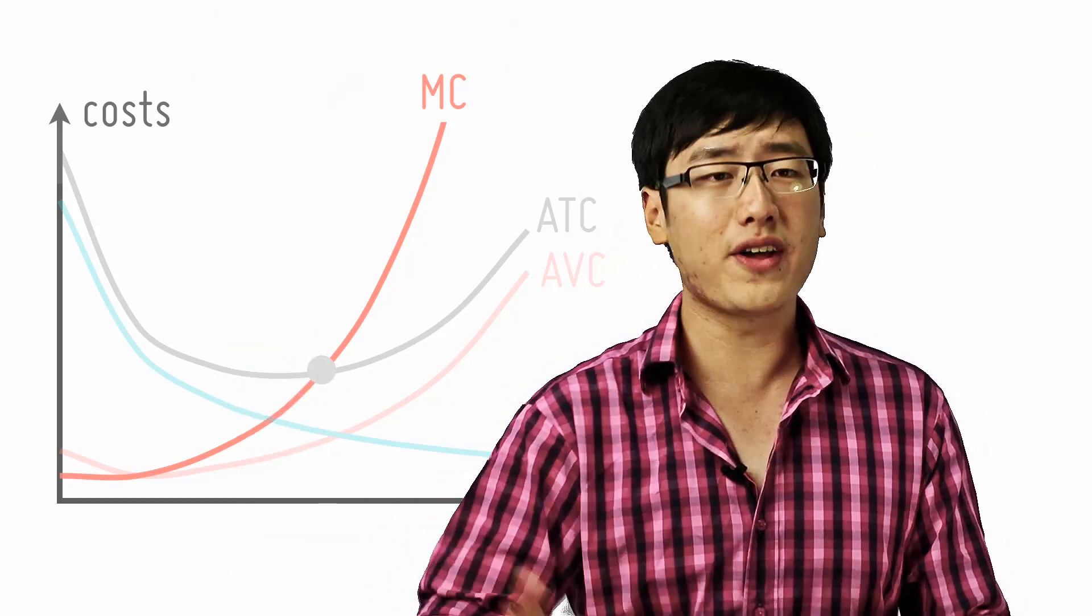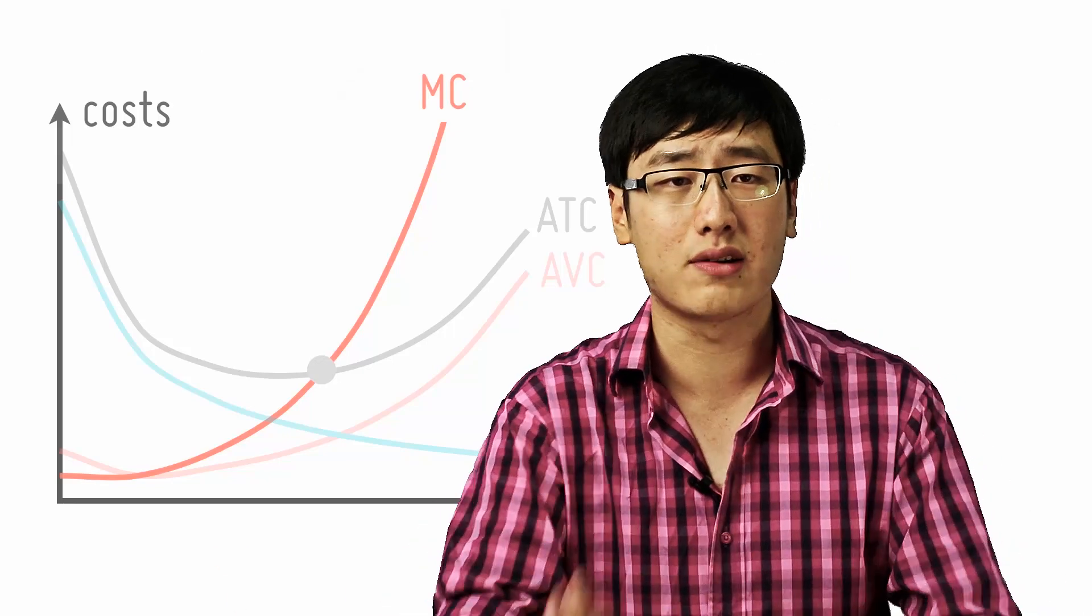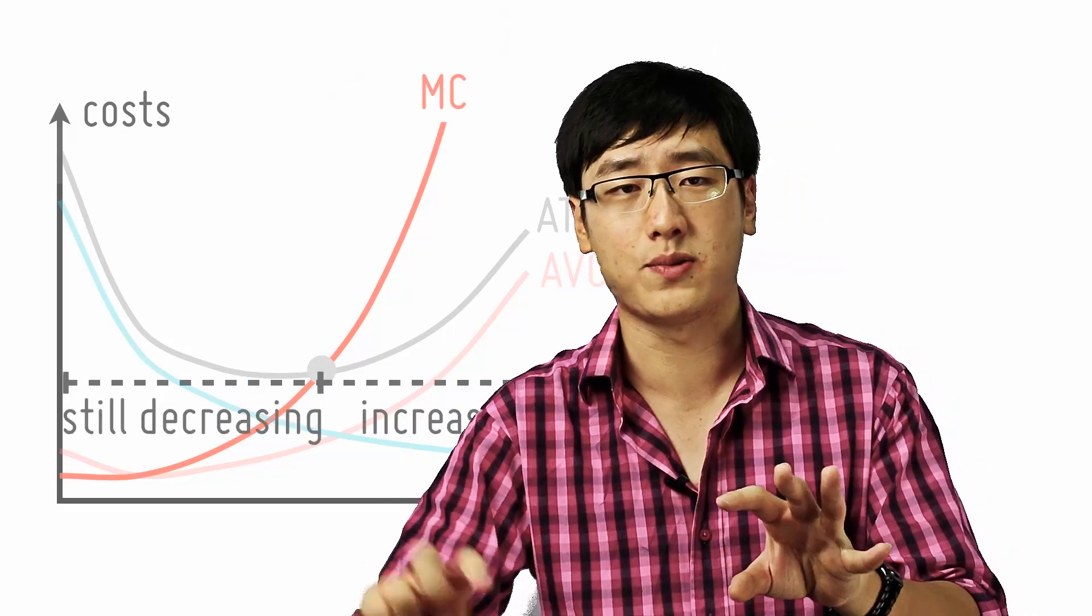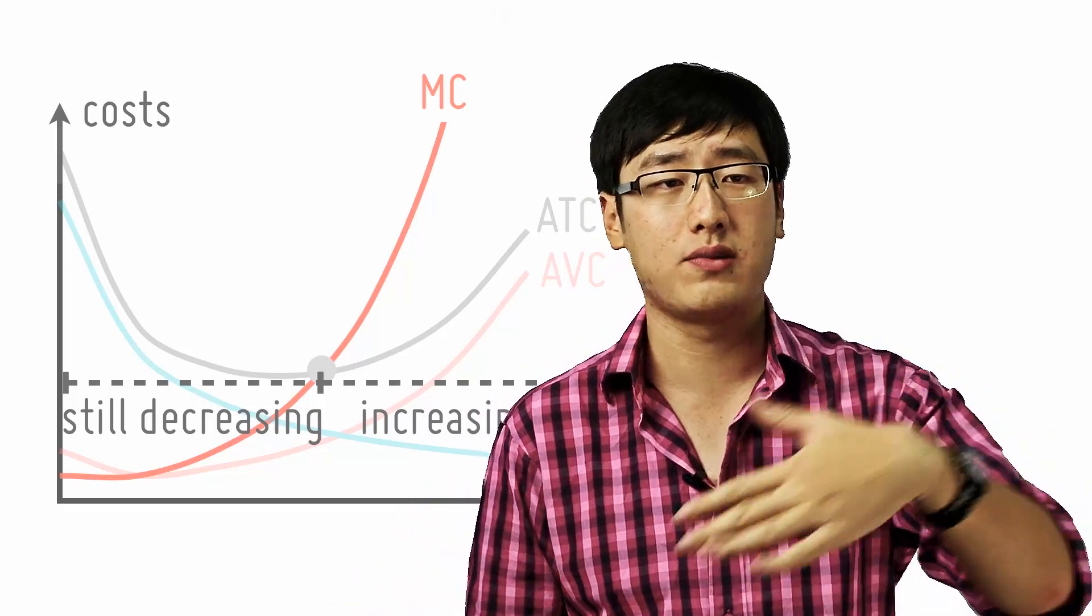When the 12 year old boy comes in, same thing, it still decreases. So even when the marginal age can increase from 10 to 12, the average age still decreases.